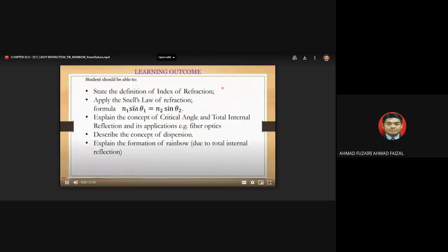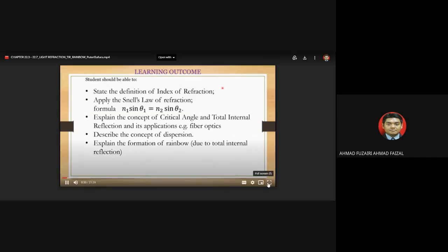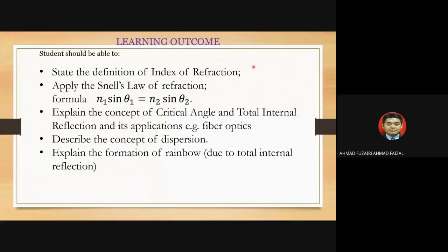These are the learning outcomes for this chapter. At the end of the lesson you should be able to state the definitions of index of refraction, apply Snell's law of refraction, explain the concept of critical angle and total internal reflection and its application such as fiber optics, describe the concept of dispersion, and explain the formation of rainbows.